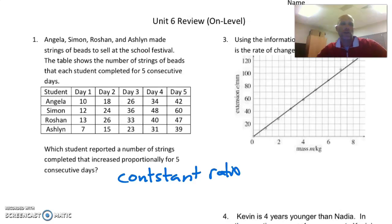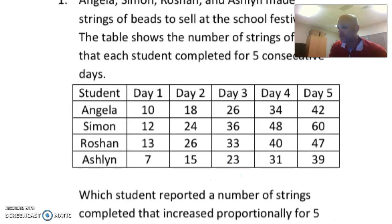it has to be constant, a constant ratio, to be proportional. Constant ratio, increasing by the same multiplicative or multiple amount. So let's look at Angela. Angela from 1 to 10 is times 10, to 2 to 18 is times 9. So that is not proportional. They have to be the same. So it cannot be Angela. I'm going to change colors here.